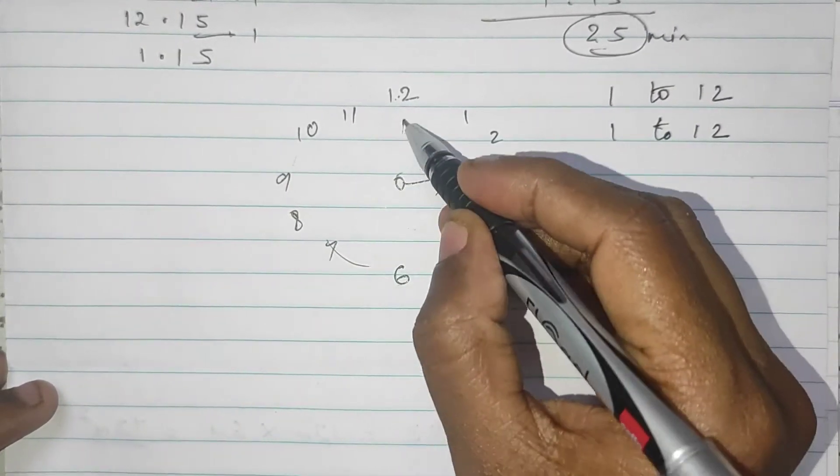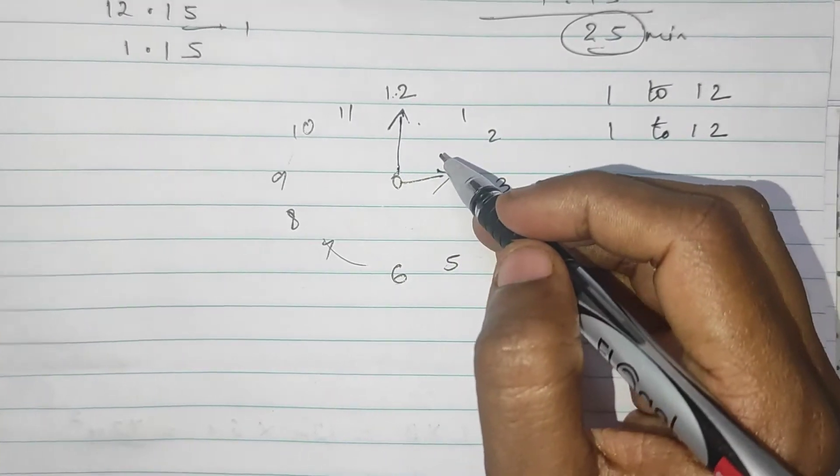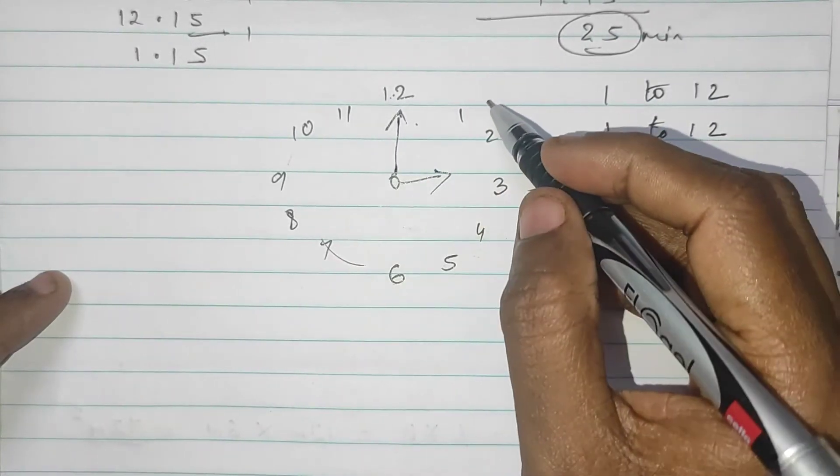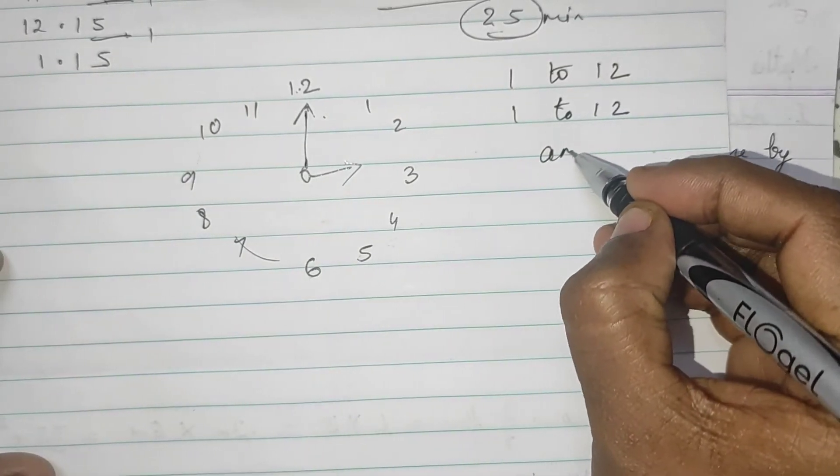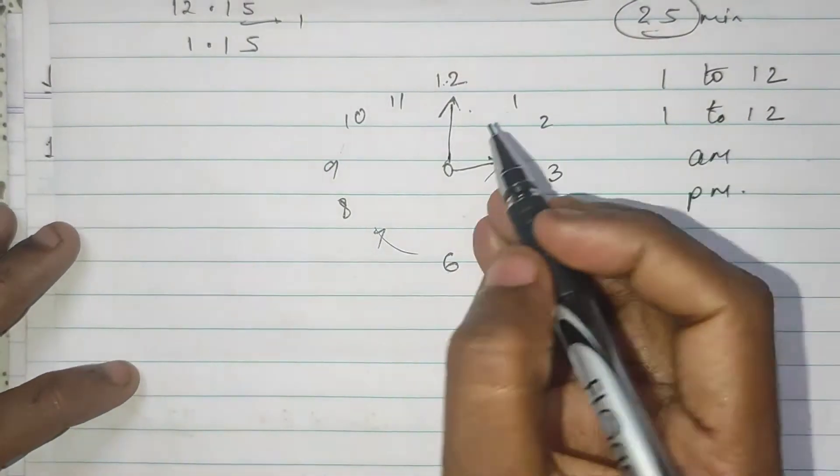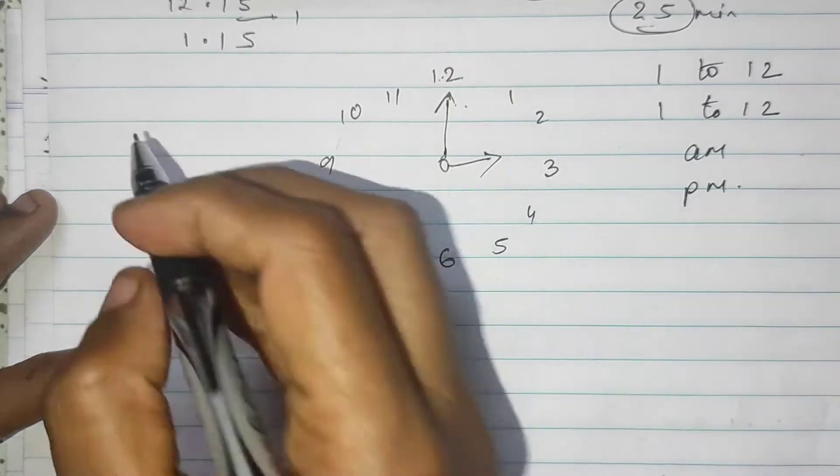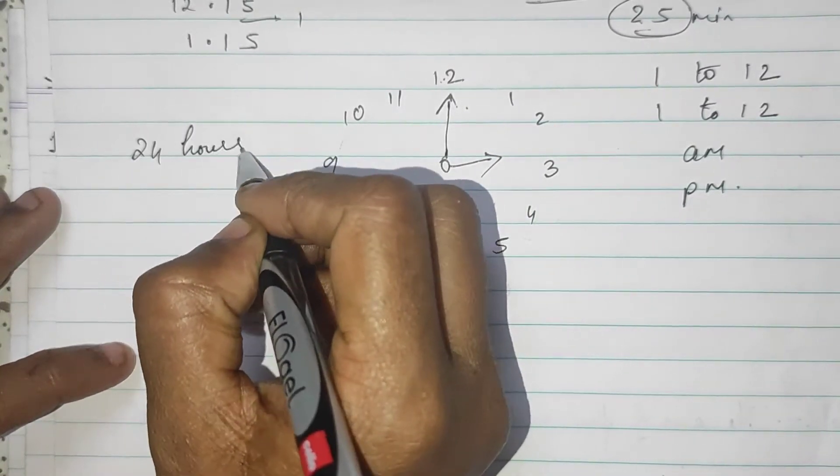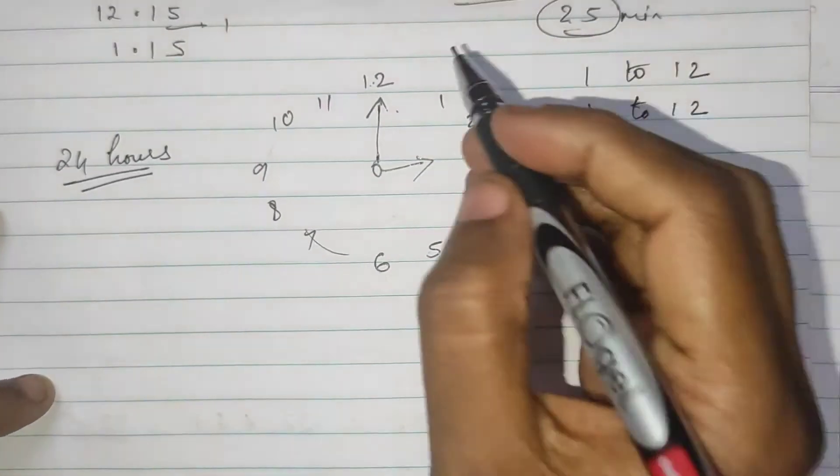When we watch a normal clock, see a time in a normal watch, it is like 3 o'clock in the afternoon or 3 o'clock at night. We write like this, a.m. and p.m. But if you want to say the same time in 24 hour pattern,